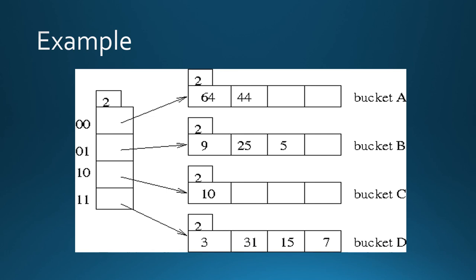And the binary values of 3, 31, 15 and 7 contains 1, 1 at the end. So 1, 1 contains key values 3, 31, 15 and 7. So this is about extendable hashing. Thank you.